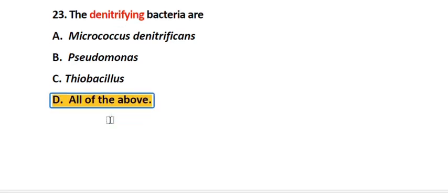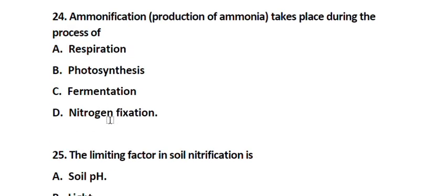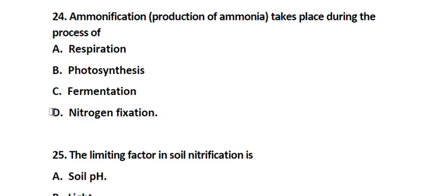Question number 24. Ammonification, meaning the production of ammonia, takes place during the process of: Option A. Respiration, Option B. Photosynthesis, Option C. Fermentation, Option D. Nitrogen fixation. The correct answer is Option D. Nitrogen fixation.